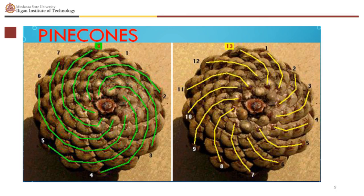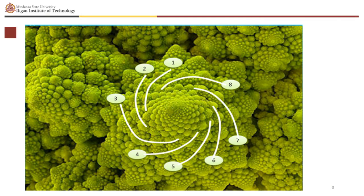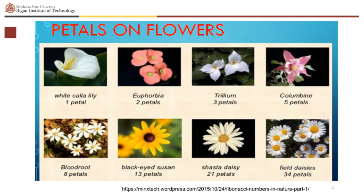Pinecones also have Fibonacci numbers in them. Even broccoli. Some flowers have petals which follow the pattern of the Fibonacci sequence. White Calla Lily has one petal, Euphorbia two petals, Trillium three petals, Columbine five petals, and Bloodroot eight petals.